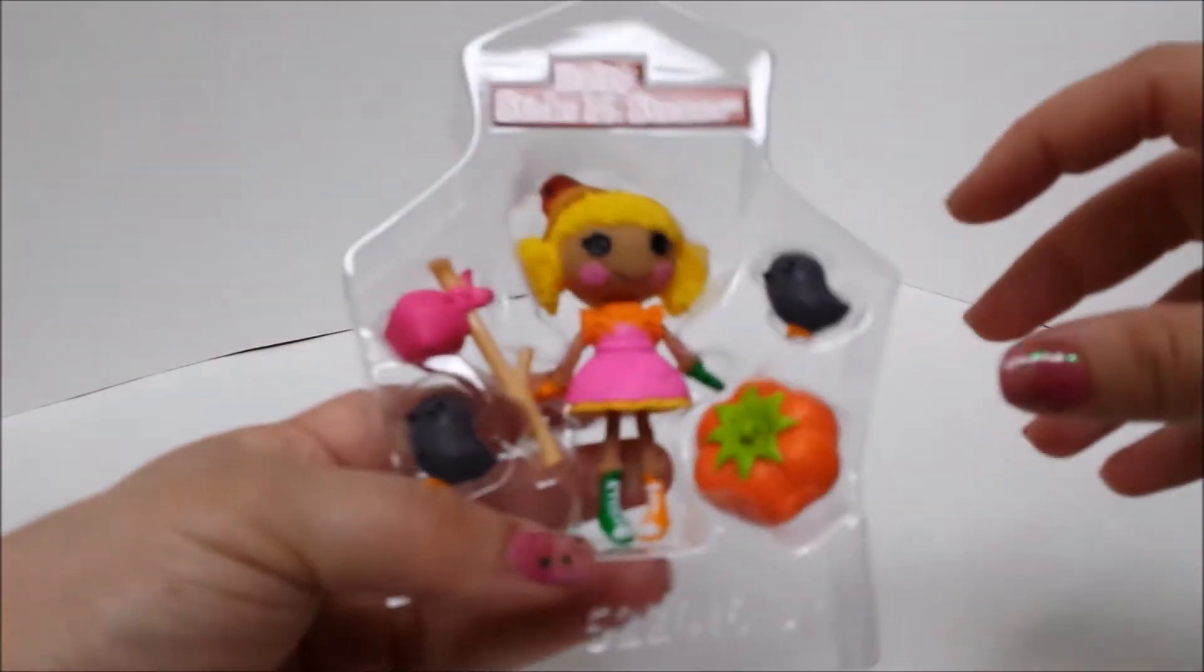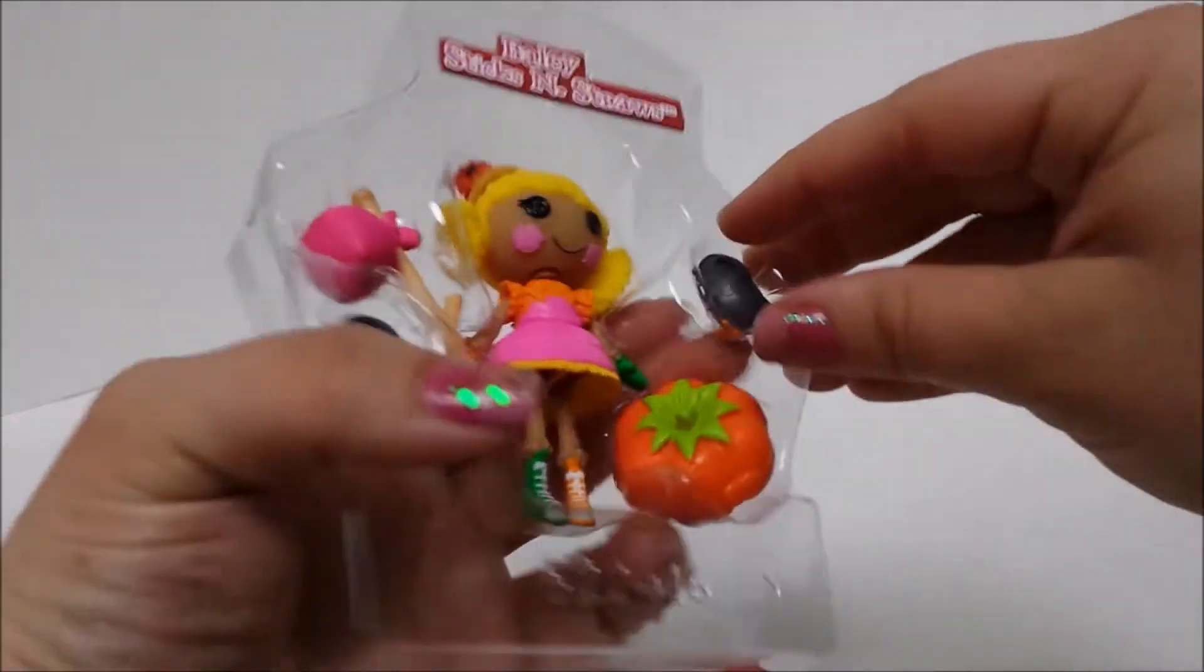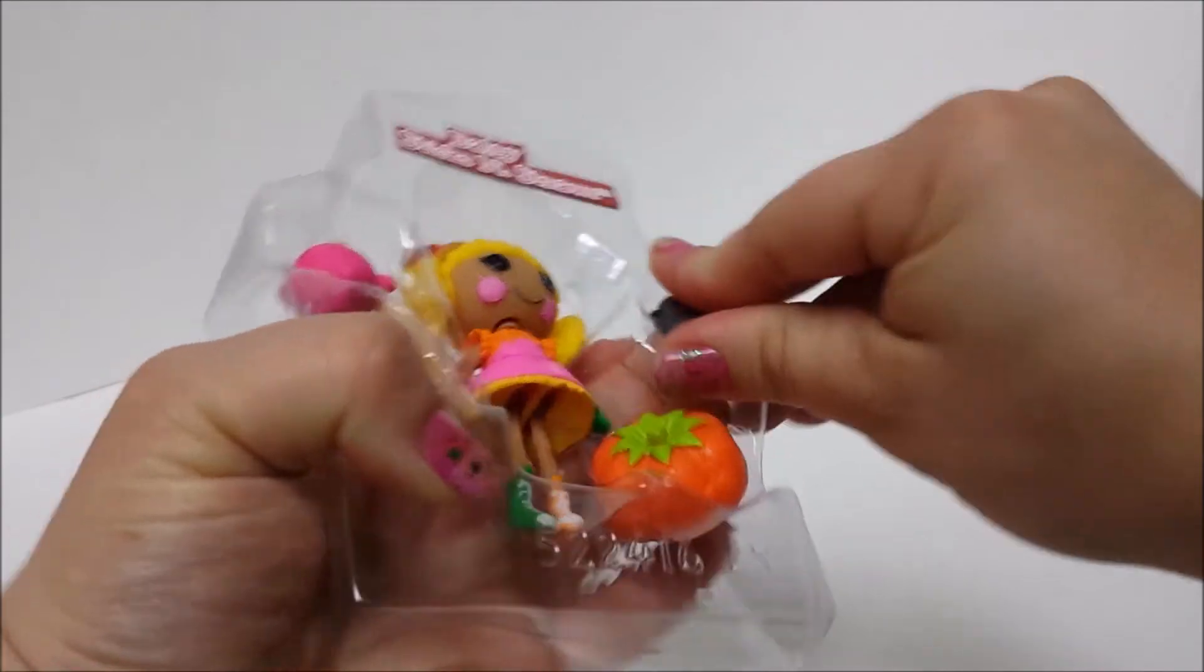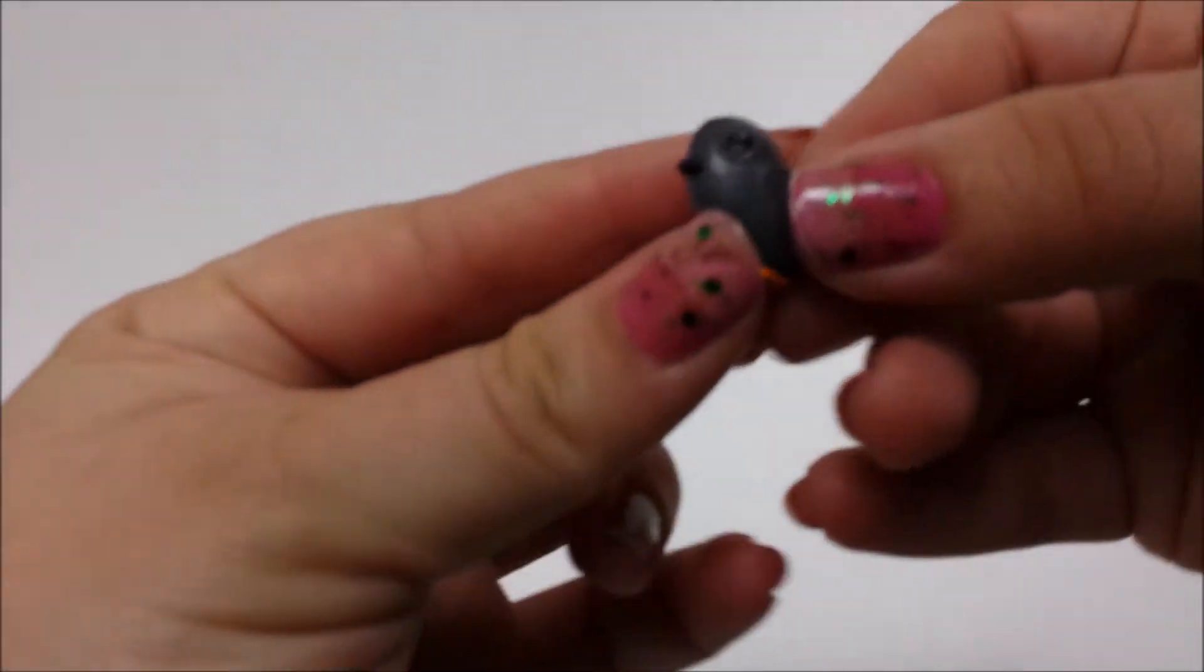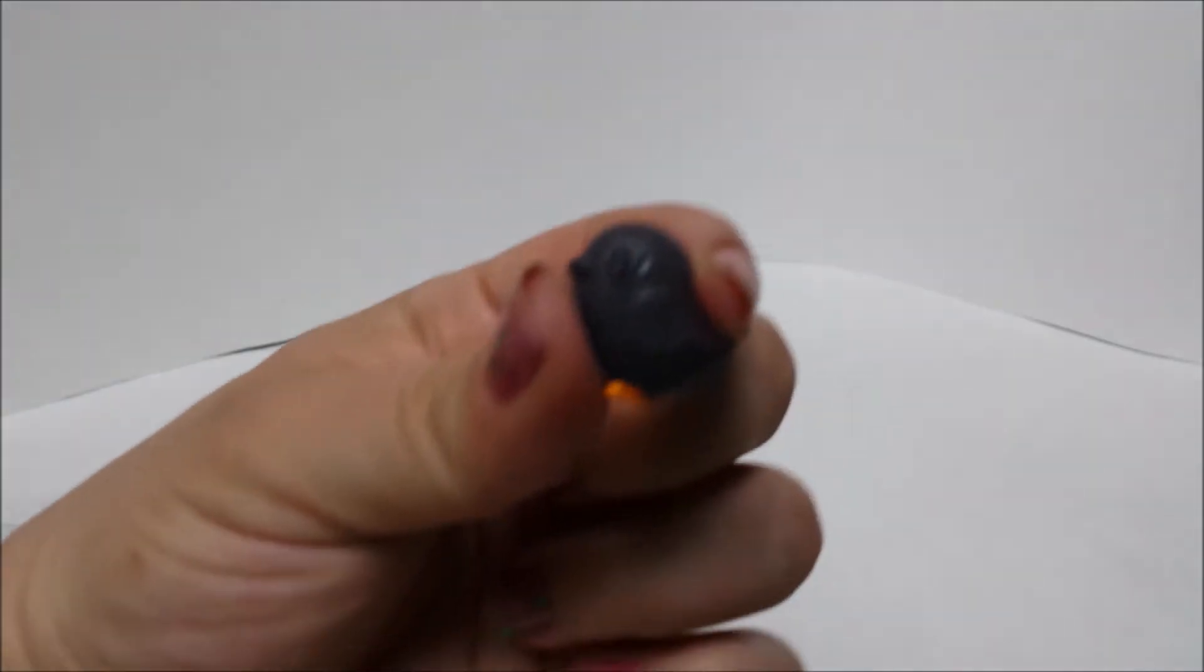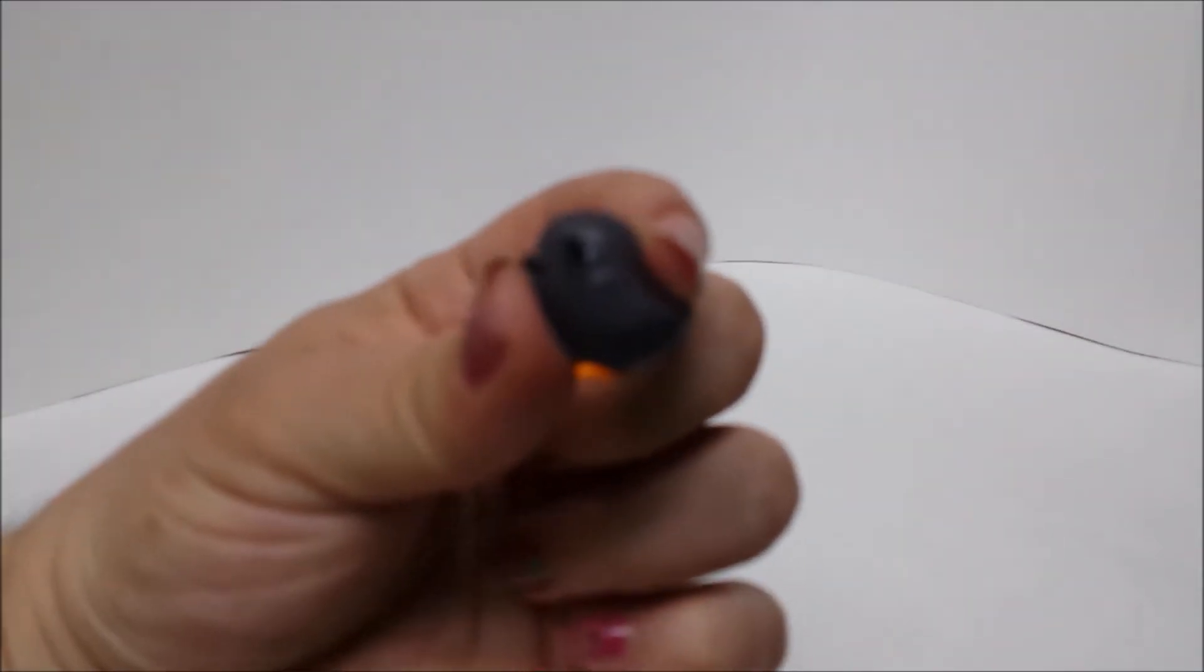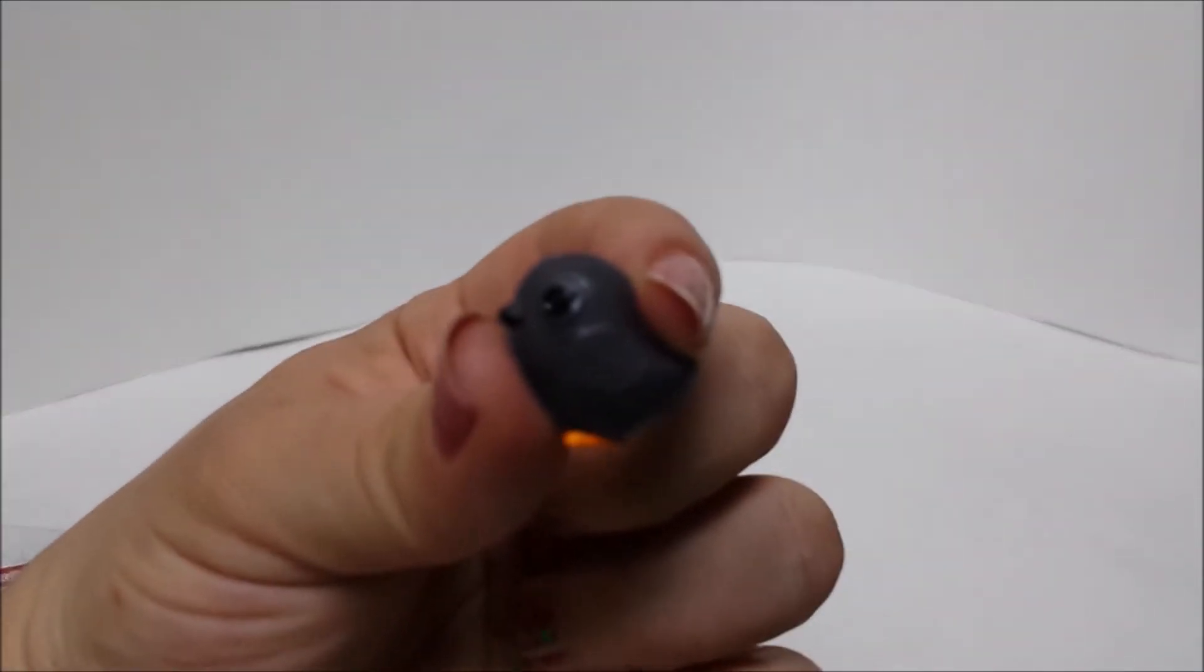So first we have a little scarecrow. Kind of hard to see there. It's a little bit of a solid color. It has a little button eye and orange little feet.